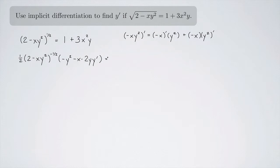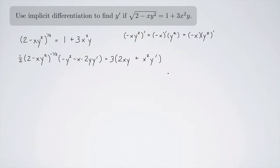Now we're ready to go ahead and do this side. The derivative of the 1 is going to be 0. This is another product rule here. So there's going to be a 3 hanging around the outside, and now we'll do the derivative of the first thing — that'll be a 2x — leave the y alone, plus. And now we'll leave the x squared alone and take the derivative of the y — that'll be a y prime. At this point you might just want to leave this alone and say this is your answer, but we'll go ahead and solve for y prime.